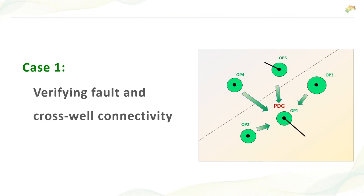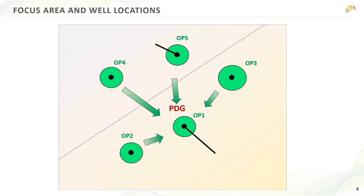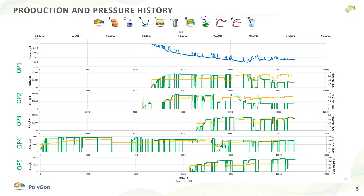Case number one: Verifying fault and cross-well connectivity. We have five producing wells — two of them horizontal — and a probable fault just between two groups of wells, visible as a dotted line. We have PDG history on producer OP1. Here is the bottom-hole pressure in blue in the top panel, and several panels showing rates and GOR for all five wells. This is all the data we need inside MRT to build the mathematical model of this interfering block.